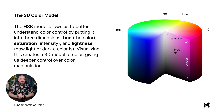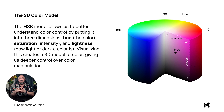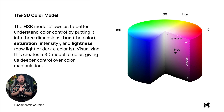All of these really are representing a 3D color model. The HSB model allows us to better understand color control by putting it into three dimensions: hue (the color), saturation (intensity), and lightness (how light or dark the color is). Visualizing this creates a 3D model of color, giving us deeper control over color manipulation. Here you can see it as a cylinder — on the wheel of the cylinder you have the hues, from top to bottom you have brightness and lightness, and from the outer edges to the center you have the saturation.